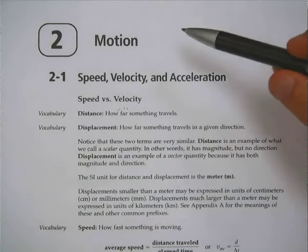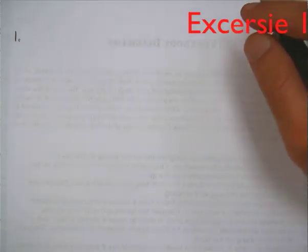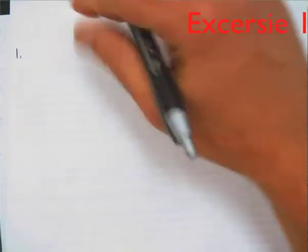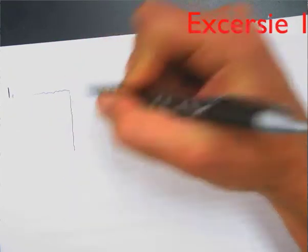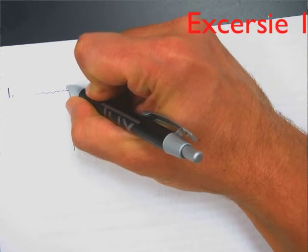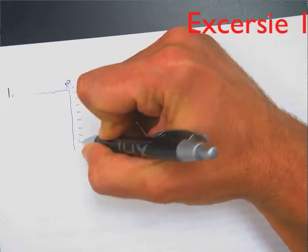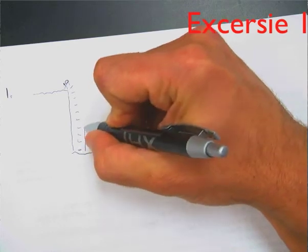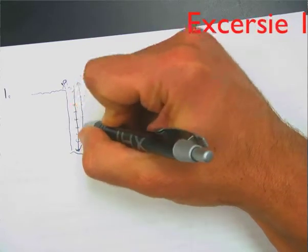We're working on these motion problems from the packet. For the first problem, we want to identify the givens, and I think it would be helpful to draw a little diagram. Here's the Grand Canyon — somebody's standing up here and yelling down. The sound travels down to the bottom, hits the bottom, and then bounces back up. So we've got a path on the way down and a path back up.